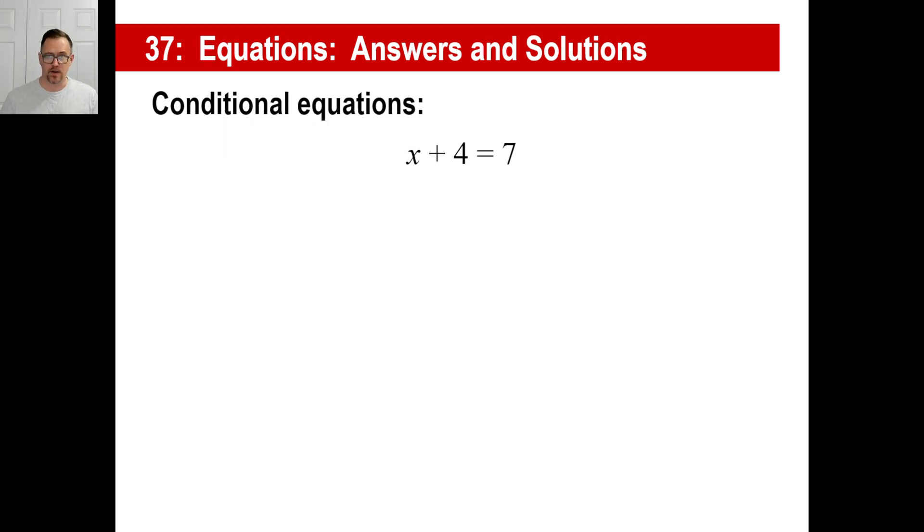3 plus 4 is 7. That's the only number out there that will equal 7 when we add 4. Now, we can look at an equation like this. Let's go ahead and copy this down. That's a conditional equation, right?